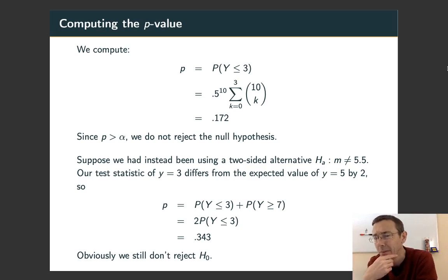As I said on the previous slide, the simplest way to do this is just to take the one that we've got, the y equals 3, and get the probability of having a result more extreme than that in the one direction. So probability of Y less than or equal to 3, and then double it. So in this case, twice the probability we got before, 0.343, and it's off by a thousandth here because of some rounding. So obviously in this case, we still don't reject H0.